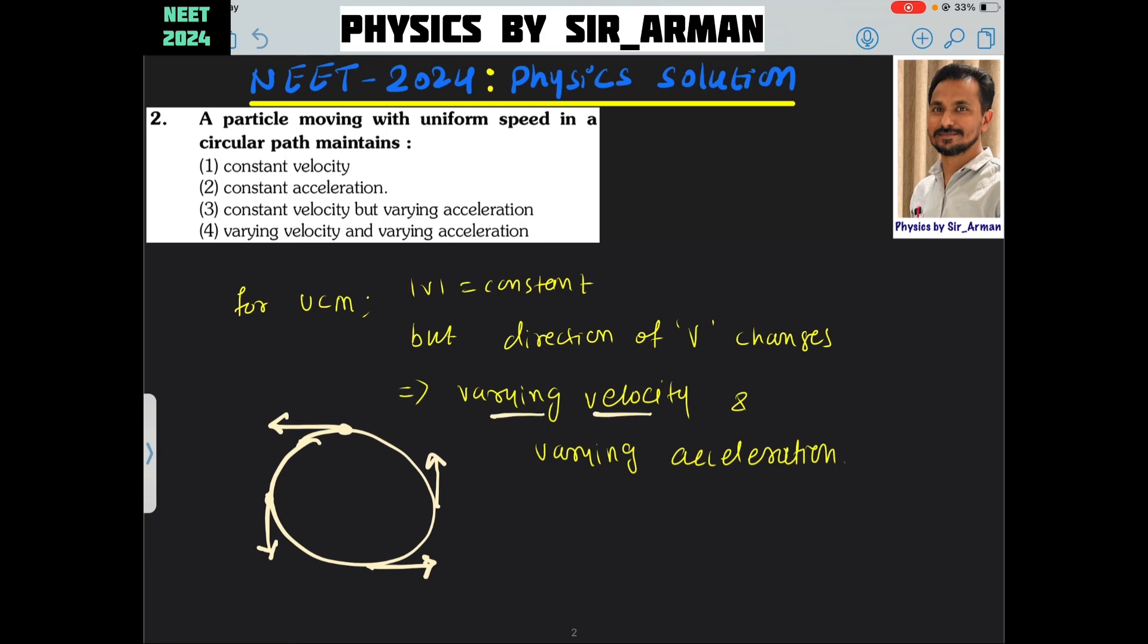Velocity is varying and also the acceleration is also varying. Because at all points, if you check the velocity, then the velocity will be different, not the magnitude of the velocity, but the direction.